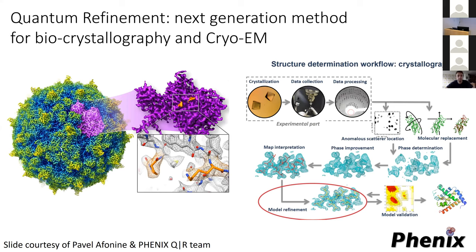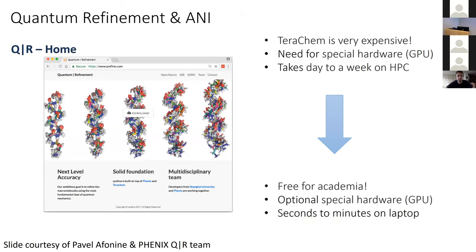We currently work with the PHENIX group — software for protein crystal structure refinement. There's a lot of excitement about cryo-EM, and one way to reconstruct crystal structures is quantum refinement through a long and complicated pipeline. We use quantum mechanical calculations to better position atoms to the electron density. What they use right now is probably the fastest quantum mechanical code, TeraChem. However, there are drawbacks — it's very expensive, requires Tesla GPUs, and for large proteins takes a week. Plugging in ANI: it's free for academia, runs on a laptop.